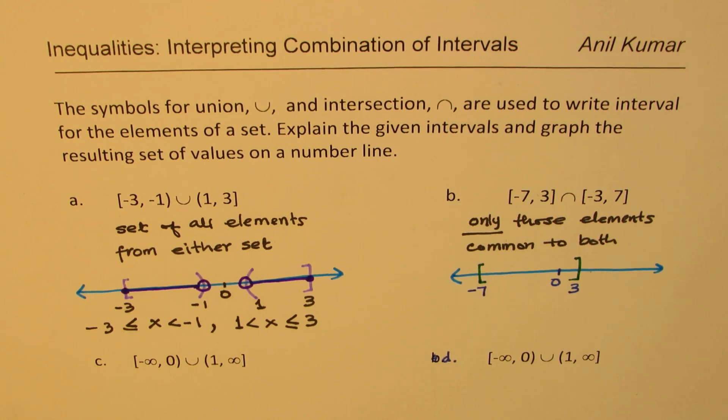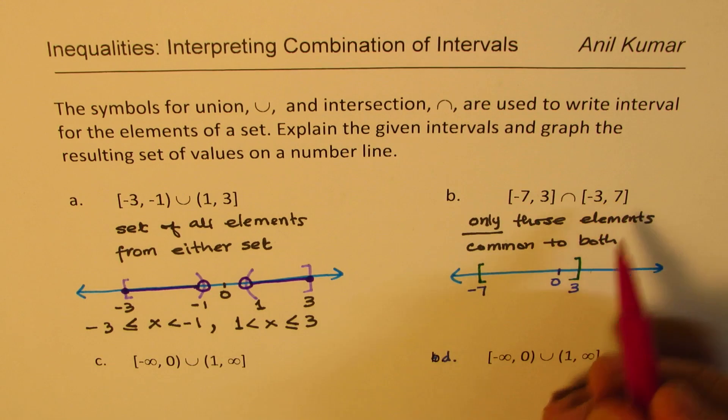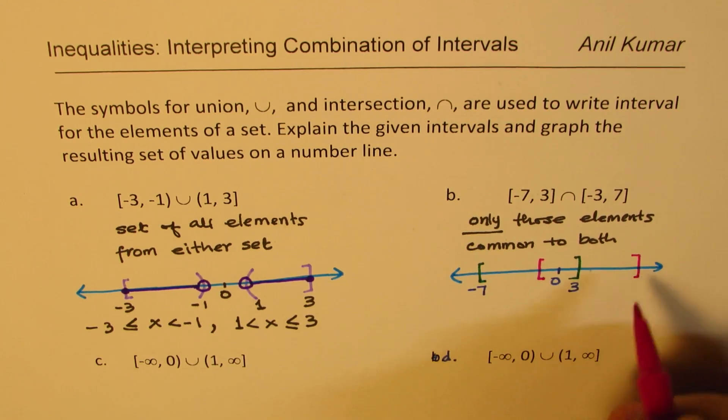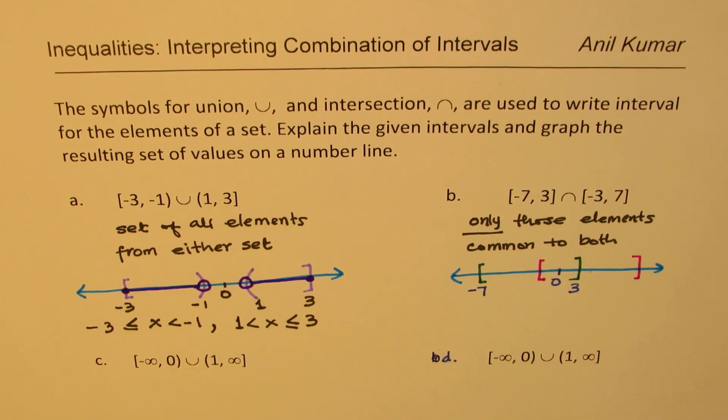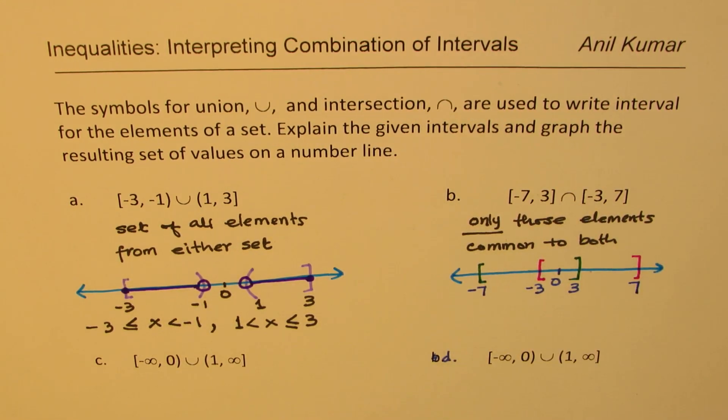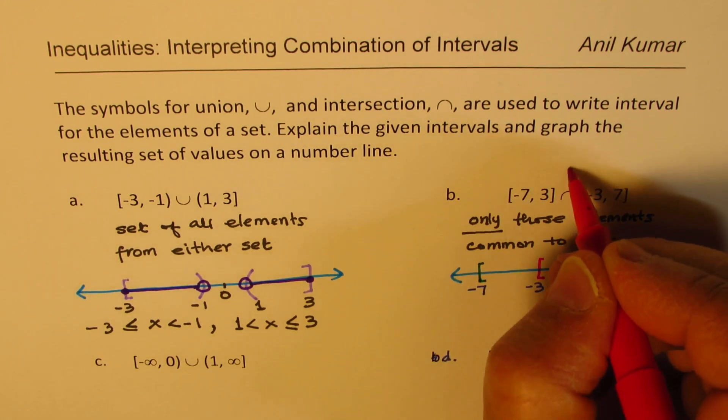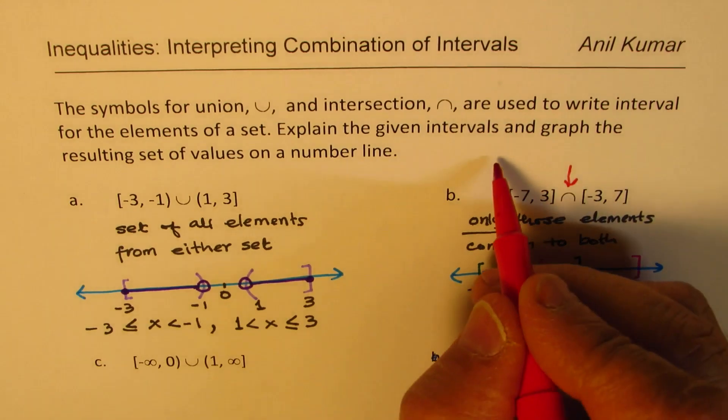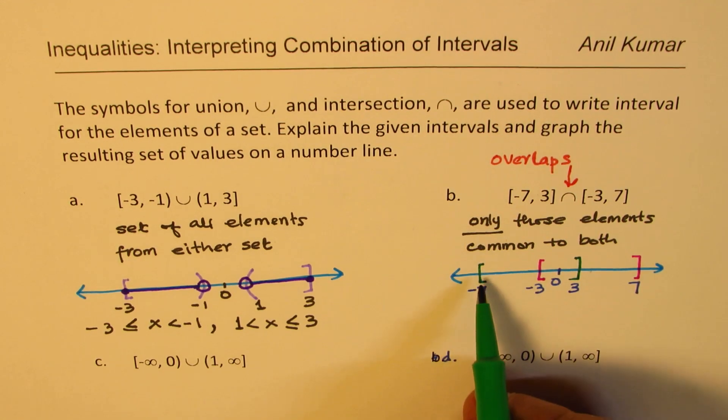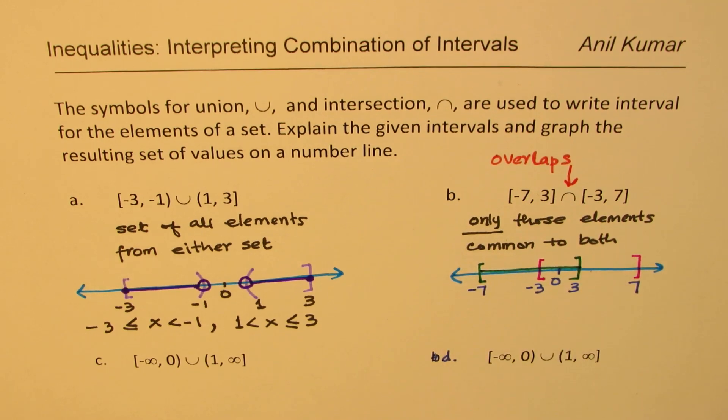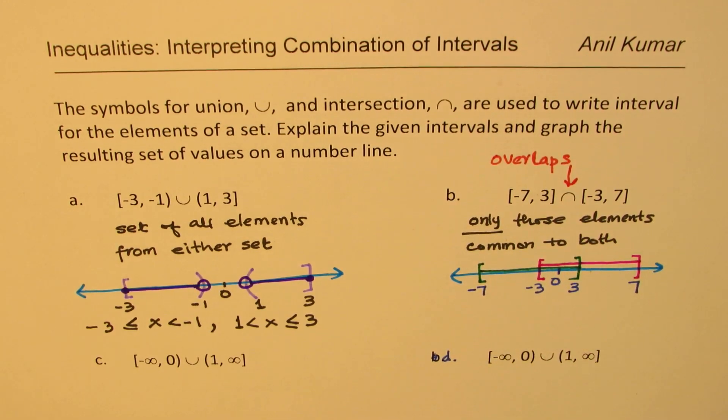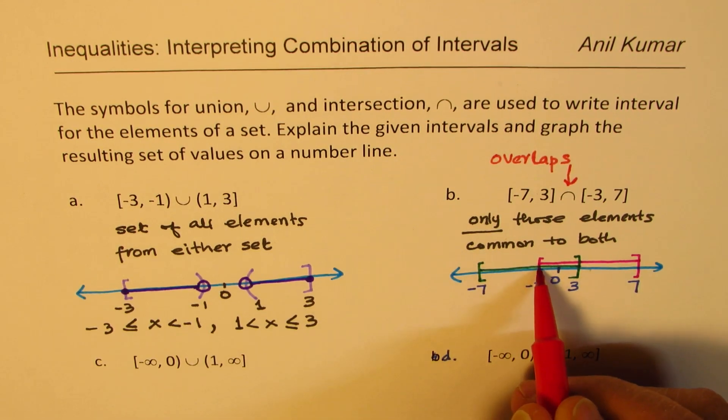And the other one, we could take it in this ink, minus 3 to 7. So, let's say this is minus 3, where minus 3 is included, right? And 7. So, we are saying the other one is from minus 3, and that is 7. The symbol here is intersection. Intersection means what overlaps. Do you see that part? Now, one set is saying all this. The other set is saying minus 3 to plus 7.